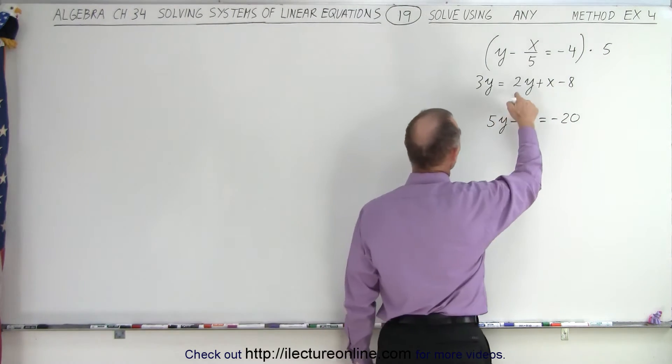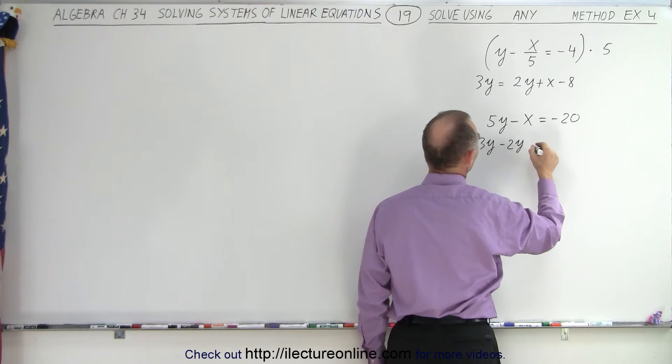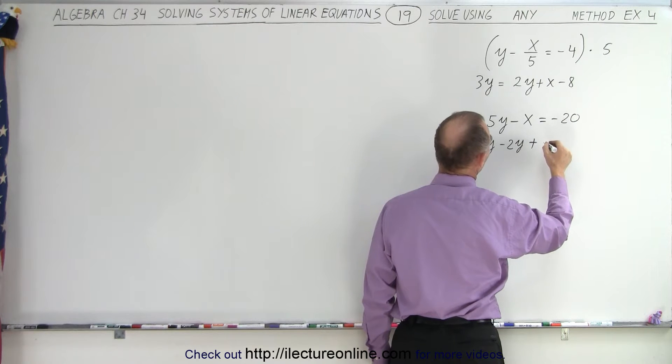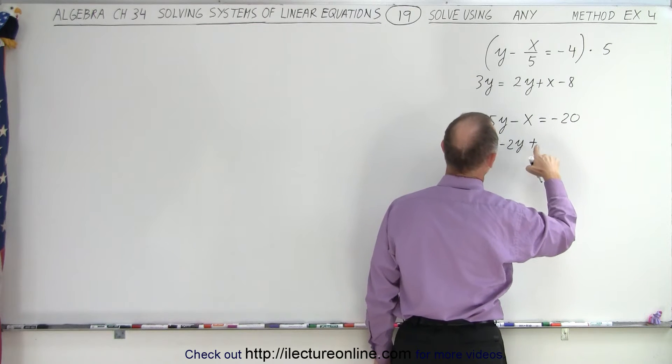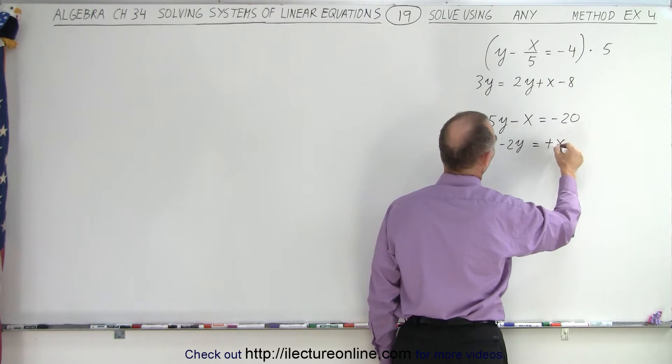The bottom equation, we're going to move the 2y to the left side, so we get 3y minus 2y, plus x, nope, not plus x, because there's an equal sign there. So equal sign, plus x, minus 8.